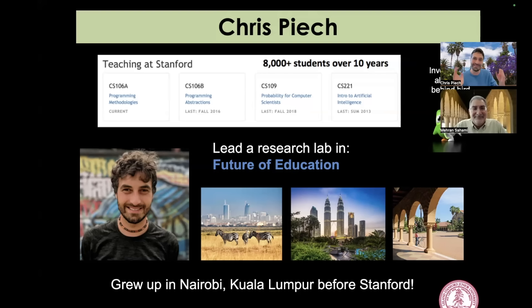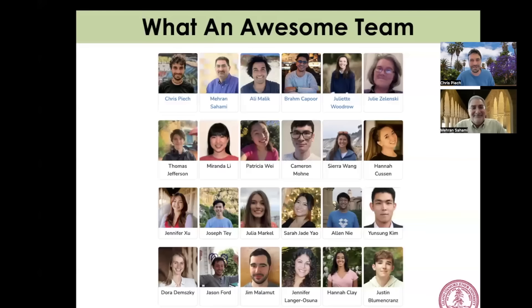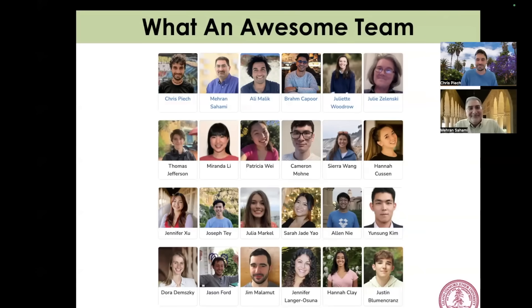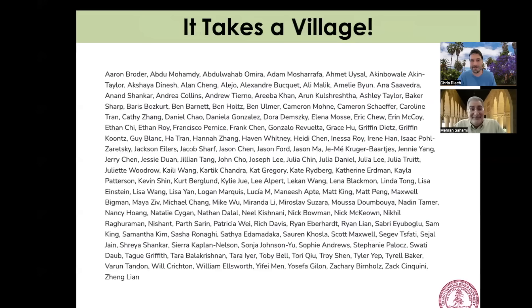I was born in Nairobi, Kenya. I lived there until I was 12 and then I moved to Kuala Lumpur, Malaysia, which was home until I was 18. Then I came to Stanford, where I had so much fun that I decided to come back as a professor. A class like Code in Place is not just made by two people — there's an incredible team of dedicated researchers, teachers, and learners who have come together to make this course. In fact, more than a hundred people have contributed to this course in some way, a big act of community service from people at Stanford and beyond.